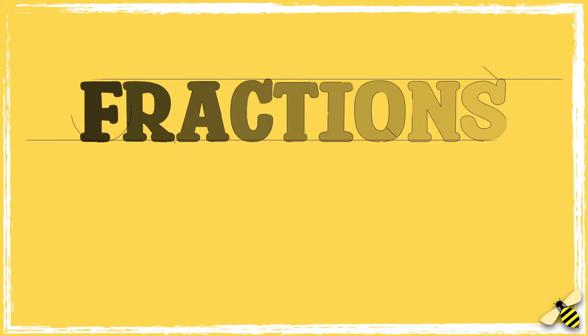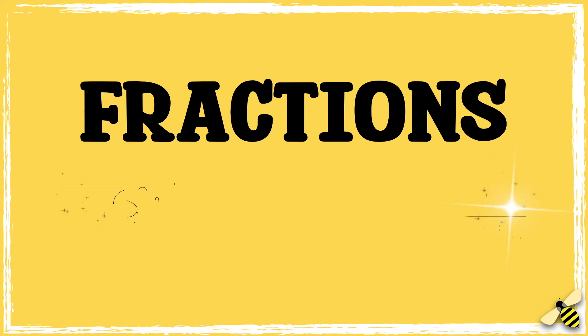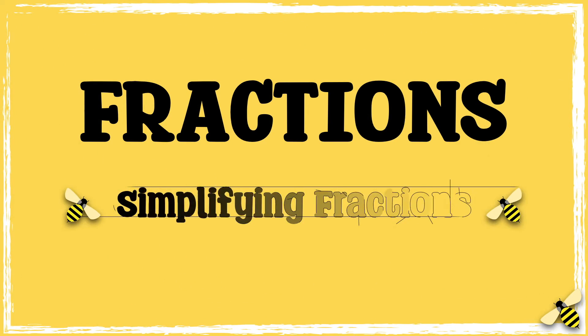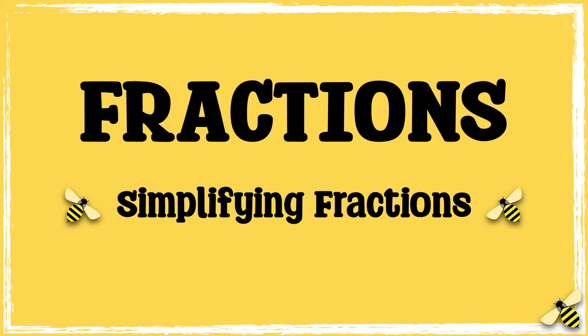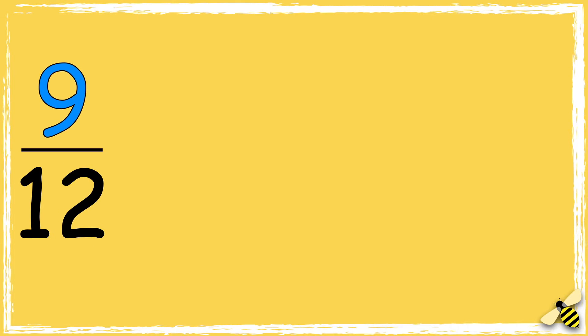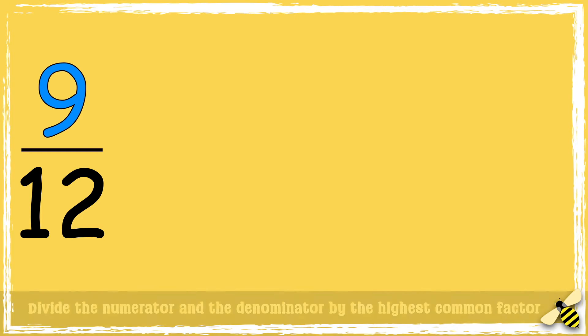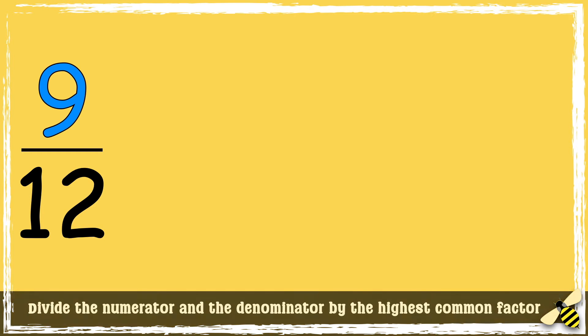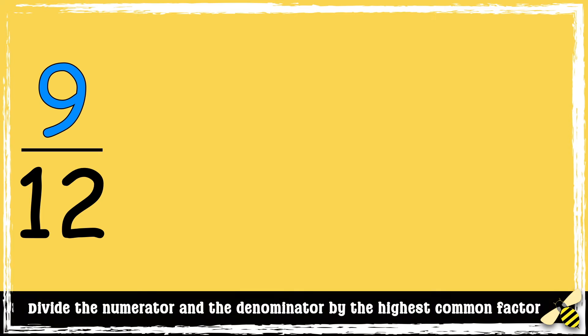In this video, we're going to look at how to simplify fractions. Here's a fraction: 9 twelfths. The method for simplifying is to divide the numerator and the denominator by the highest common factor.